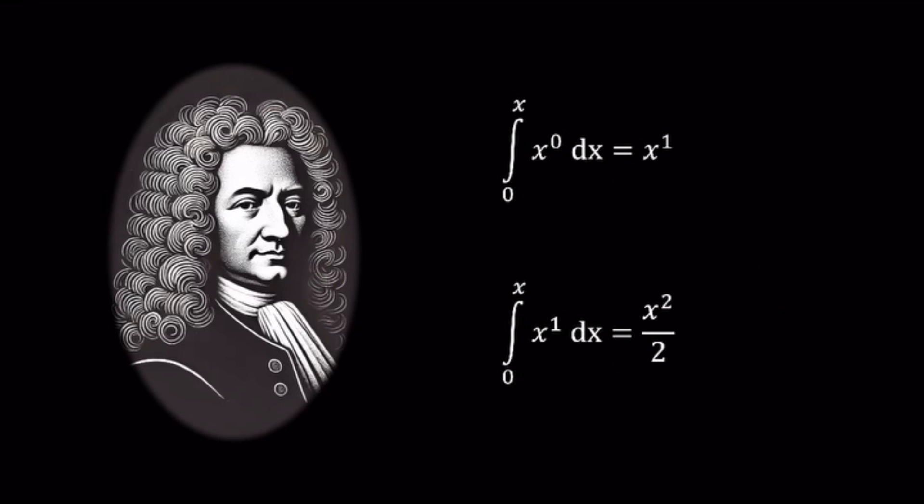At this point, you might notice a pattern. When x is raised to the power of 0, the result is x to the power of 1 divided by 1. When x is raised to the power of 1, the result is x to the power of 2 divided by 2.